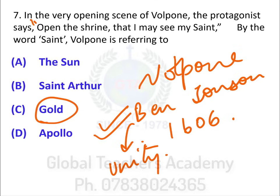Volpone is a very shrewd man. He's talking to his servant Mosca. The entire line is: 'Good morning to the day, and next my gold — open the shrine that I may see my saint.' So gold is compared to a saint — gold becomes his spiritual master. This highlights the greed of the character. Within one opening statement, equating gold to a spiritual master, the playwright has created a very grim picture of someone very greedy. So gold is your answer here.